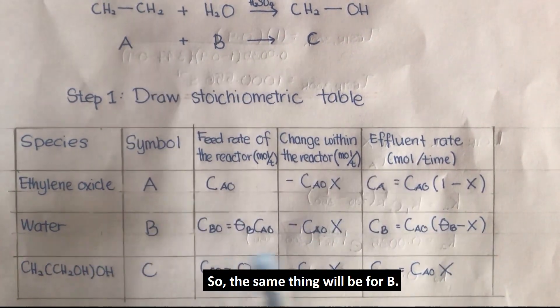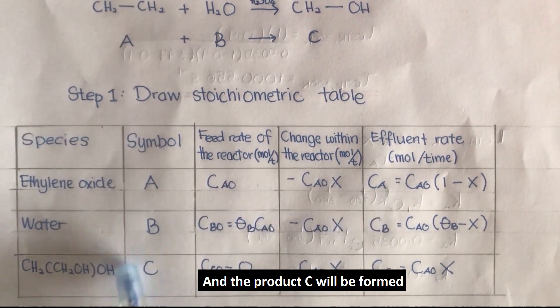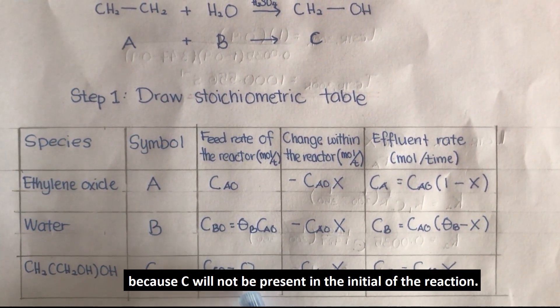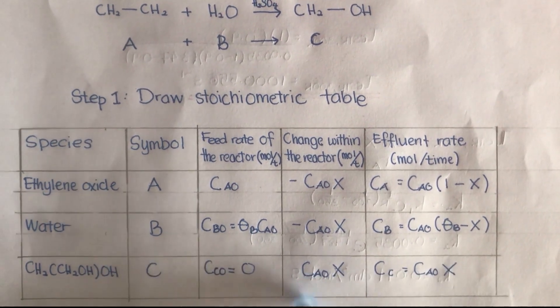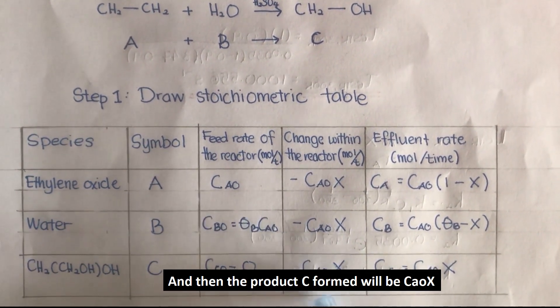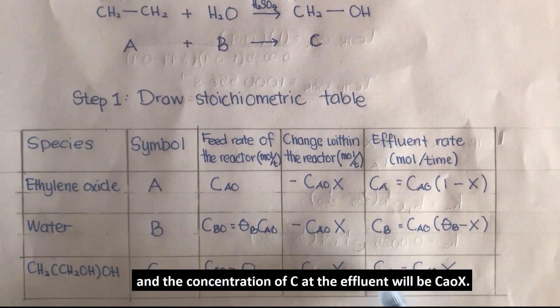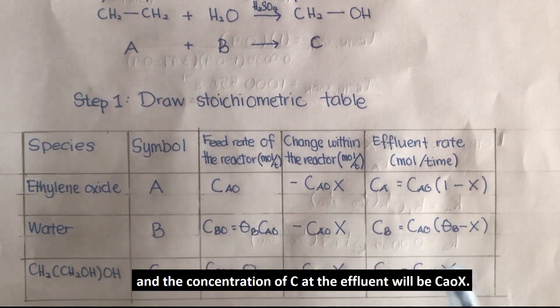The same thing will be for B, and the product C will be formed whereby the initial concentration of C will be zero because C was not present initially in the reaction. The products of C formed will be Ca0X and the concentration of C at the effluent will be Ca0X.